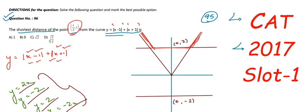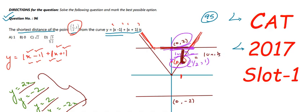Now let's plot the point (1/2, 1). x = 1/2 is between 0 and 1, and y = 1. The nearest point on the curve is (0, 2). The vertical distance from (0, 1) up to (0, 2) is 1 unit. Since the curve has a straight horizontal section at y = 2 and the point lies directly below it, the shortest distance is 1 unit.